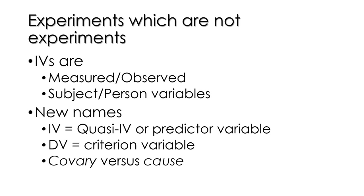Sometimes the term criterion variable is used when dealing with quasi-experiments. That's a term from psychometrics — when you're predicting something and want to know whether it caused a change, you have a criterion. Finally, while in a true experiment the independent variable causes changes in the dependent variable, we can no longer use the term cause with quasi-experiments. We have to say the quasi-IV co-varies with the dependent variable, because using cause is logically unsound with a quasi-experiment.